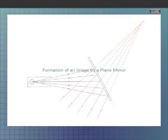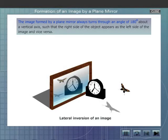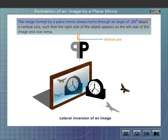Formation of an image by a plane mirror. The image formed by a plane mirror always turns through an angle of 180 degrees about a vertical axis, such that the right side of the object appears as the left side of the image and vice versa. This phenomenon is called lateral inversion.